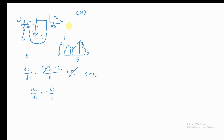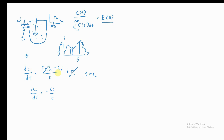If we divide C(t) by the integral of C over all possible times — integrating from t-naught to infinity — we get E(θ). We can rewrite t − t-naught as θ. So if we can find the function C(t), we can find E(θ). We've written a material balance for the tracer across the CSTR, and now we can integrate this equation.